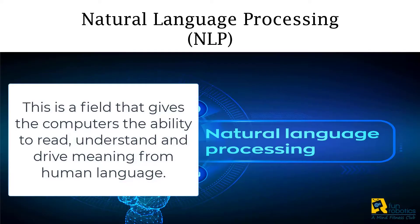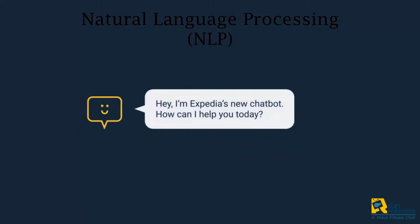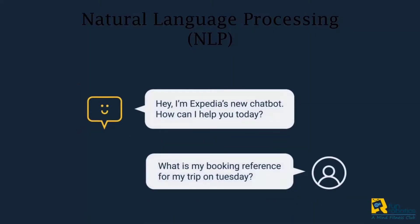Next up is natural language processing, or in short NLP. This is a field of artificial intelligence that gives machines the ability to read, understand, and derive meaning from human language. Just like how computer vision was for images, this field is highly related to text.